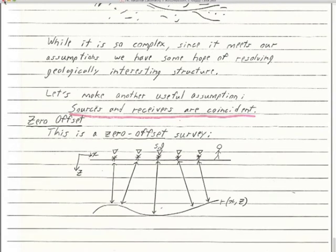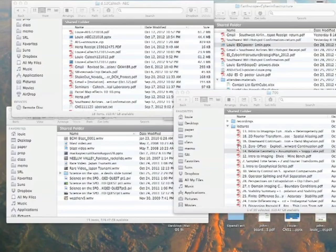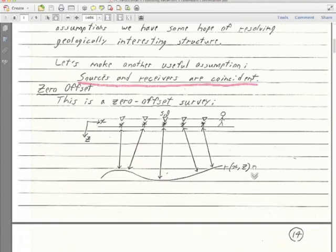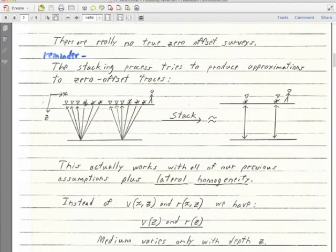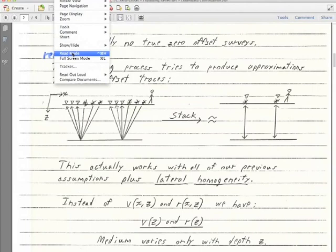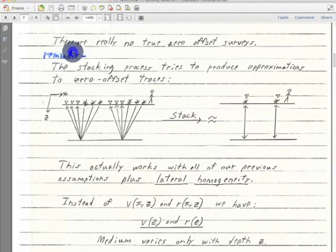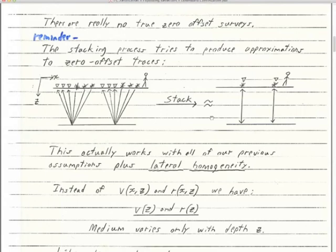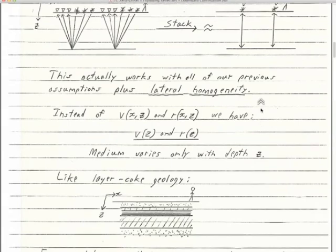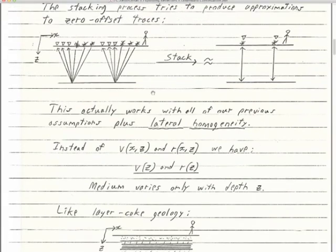Migration will be the correction most needed when we're trying to resolve dipping structure. On land, we don't have true zero offset data, but since Graham has been here, I've been educated about some really great zero offset data sets out there. Graham has been responsible for collecting a lot of them.